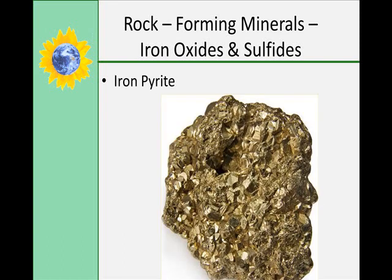Iron pyrite is another one — it's made of iron sulfide. It's called fool's gold and does look a little bit like gold, but it will streak gray instead of gold like real gold will. Those are some basic introductions to the minerals, especially the rock-forming minerals. You need to know which ones are rock-forming, so please go over this lecture a couple of times to study that material.